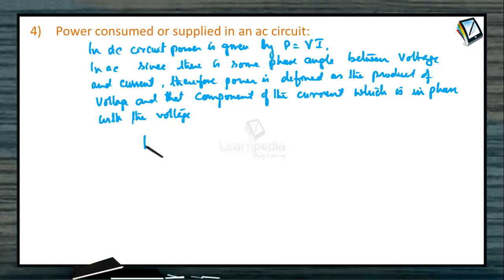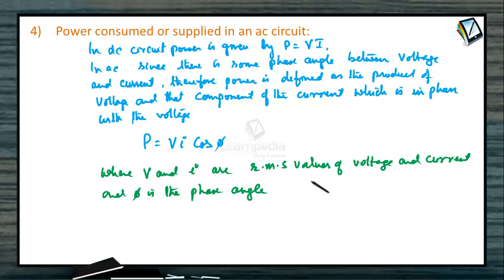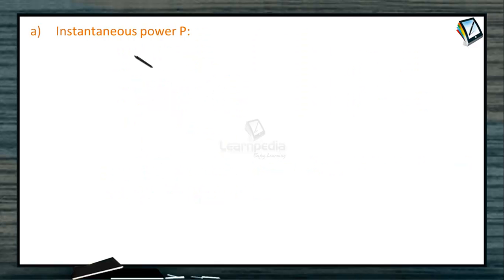That is, P is equal to V I cos phi, where V and I are root mean square values of voltage and current and phi is the phase angle. So power in AC will be P is equal to V into I into cos phi.